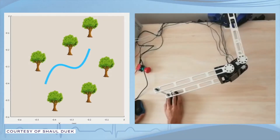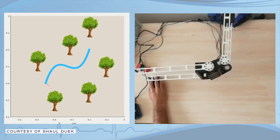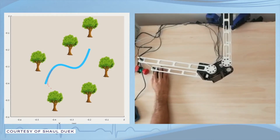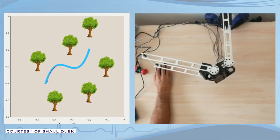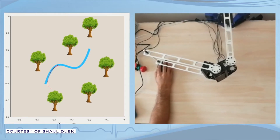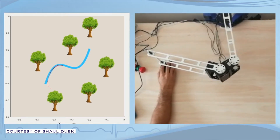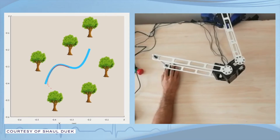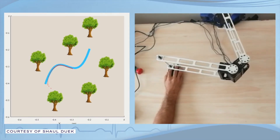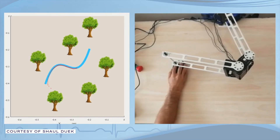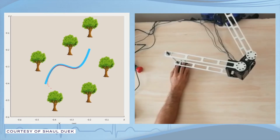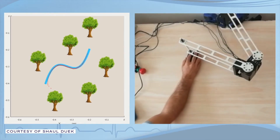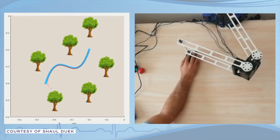Passive rehabilitation can be used at the early stages of the impairment where the affected limb has no movement. In this type of therapy, the robot moves the affected limb of the patient through a predefined injury-free trajectory a couple of times during each session, and the patient does no effort to help the robot perform the task.